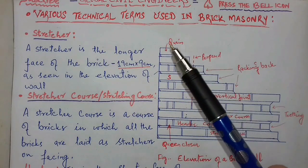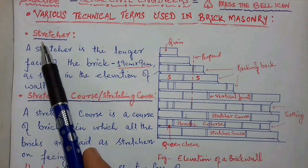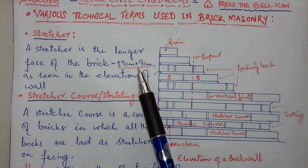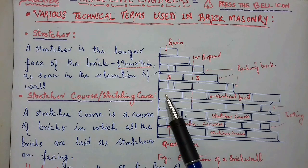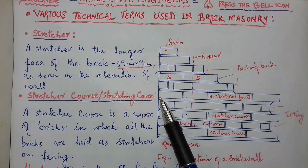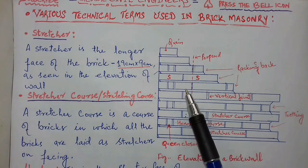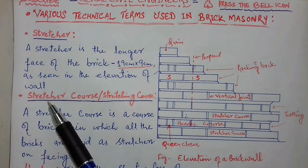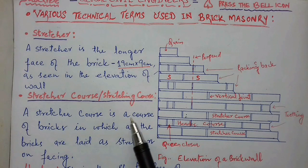Let's discuss various technical terms used in brick masonry work. The first one is stretcher. A stretcher is the longer face of the brick — 19 cm by 9 cm. As you can see, this brick has a dimension of 19 cm and thickness 9 cm. This face of the brick is known as stretcher.